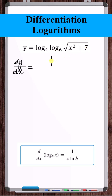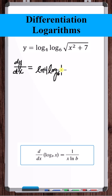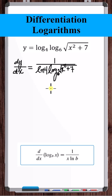What is the derivative of log base 4 of something? It's 1 over the natural log of the base times that something, times the derivative of that something — so times the derivative of log base 6 of x squared plus 7. What is the derivative of log base 6 of x squared plus 7?